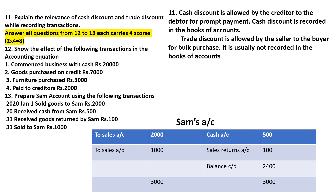Explain the relevance of cash discount and trade discount while recording transactions. Cash discount is recorded in the books of account — it is the discount given by sellers to buyers. The trade discount is usually not recorded in the books of accounts, whereas cash discount is recorded in the books of accounts.